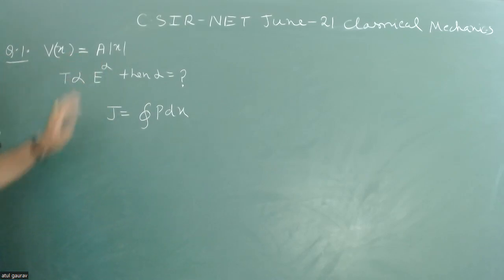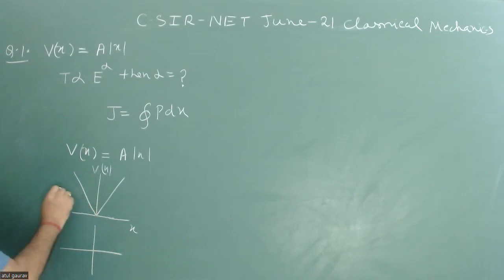If we look at this particular potential, V(x) equals a mod x, it's basically something like this. This is my V(x) versus x. If we're going to plot the phase curve for some value of energy, then this phase curve is bounded something like this.